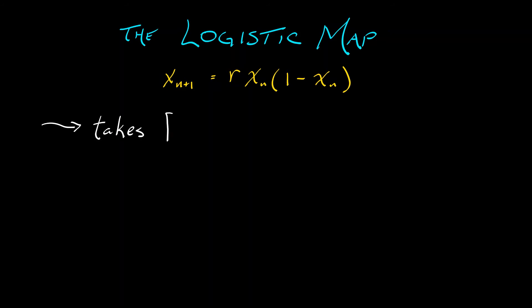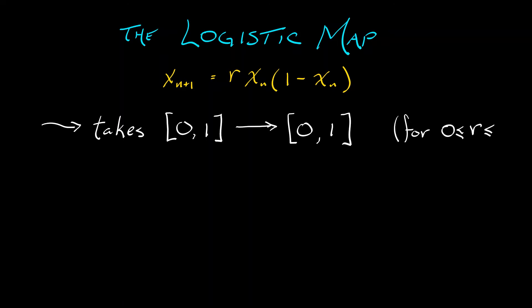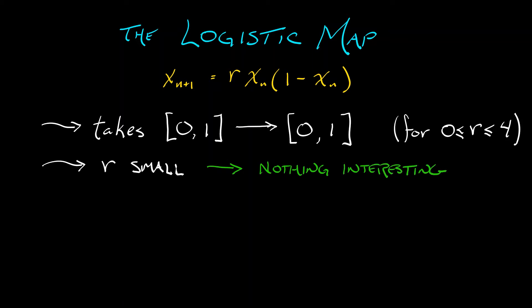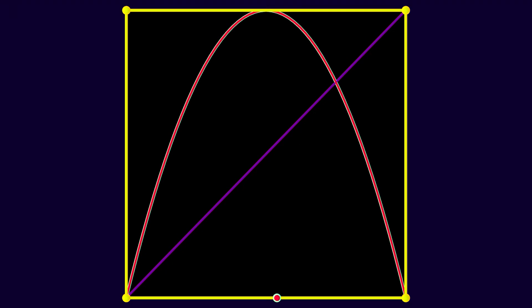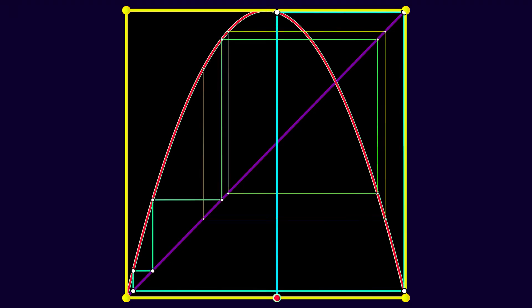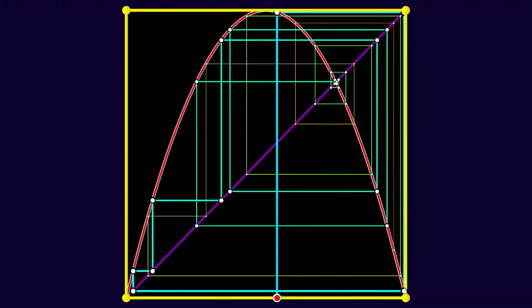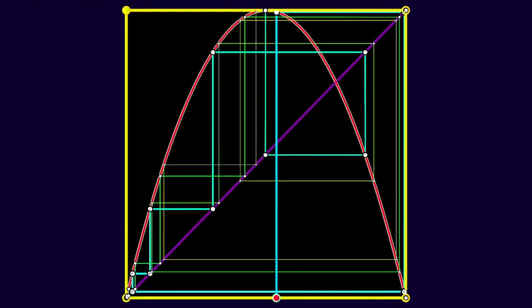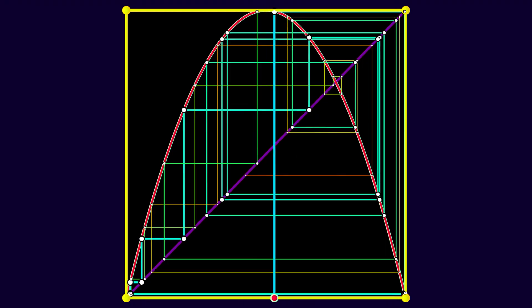As a mapping of the interval, this is really simple. It takes the closed interval from 0 to 1 to itself for values of the parameter r between 0 and 4. When r is small, there's nothing interesting — just a simple equilibrium, really simple dynamics. But when r equals 4, this system is full-on chaotic. If you look at the diagram, it resembles very much what happened in the tent map. In fact, it is very much like the tent map — there is full symbolic dynamics on sequences of 0s and 1s; that whole thing works in this case.